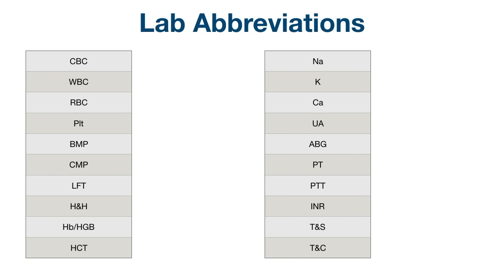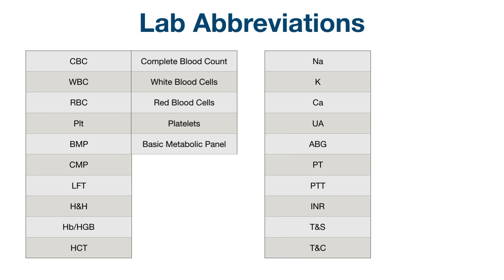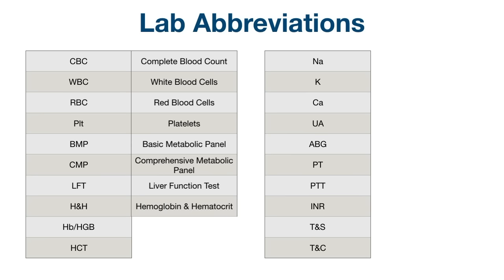Next, we have common lab abbreviations. How many of these can you name before looking at the answers? CBC stands for complete blood count. WBC: white blood cells. RBC: red blood cells. PLT: platelets. BMP: basic metabolic panel. CMP: comprehensive metabolic panel. LFT: liver function test. H&H: hemoglobin and hematocrit.